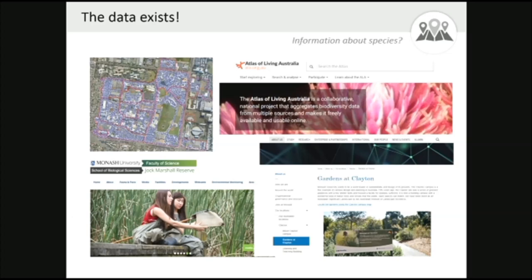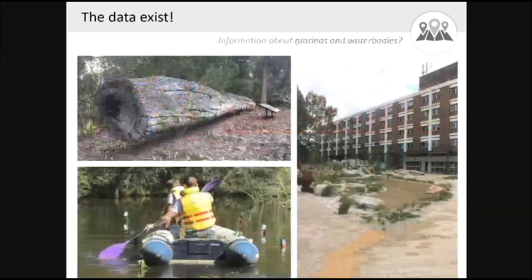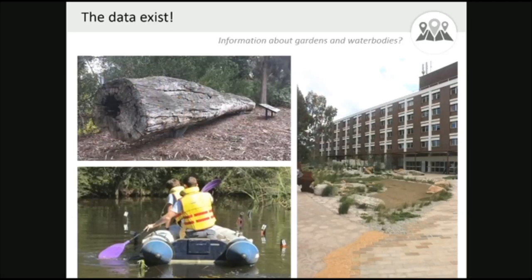We also have information about species on our website, and information on databases — general databases, national databases like the Atlas of Living Australia, and Climate Watch data. So a little bit of citizen science data is also available, as well as data about the different habitats, available on websites and across people.